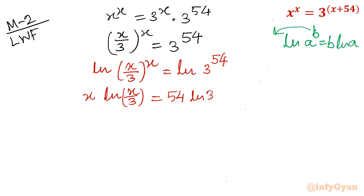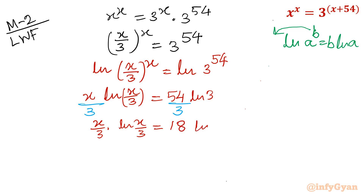To set up the Lambert W function, I need x/3 as the base quantity. So I divide both sides by 3, which gives (x/3) · ln(x/3) = 18·ln3.